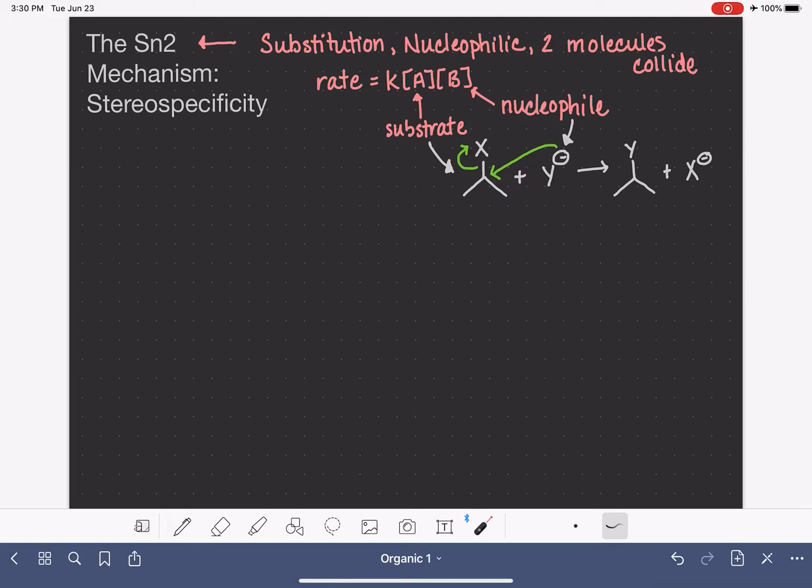The SN2 reaction is stereospecific or it has stereospecificity, which is a lot of syllables to just say that the reaction produces one specific stereoisomer. That means that if the product of an SN2 reaction has a chiral carbon, like if this were a chiral carbon (it's not, but if it were), the reaction would exclusively produce the R or exclusively produce the S stereoisomer, one or the other, but not both.